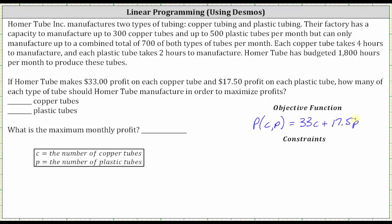Now let's write the constraints. The factory has a capacity to manufacture up to 300 copper tubes per month, and C must be non-negative, so C must be greater than or equal to zero and less than or equal to 300. They can also make up to 500 plastic tubes per month, so p must be greater than or equal to zero and less than or equal to 500.